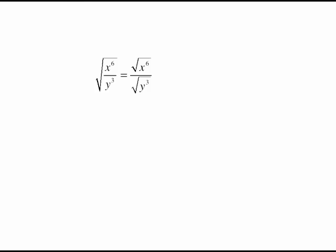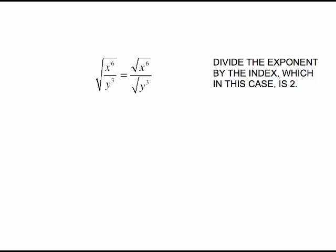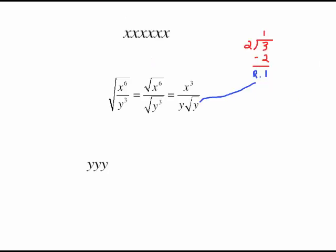Remember from previous videos on square roots that when you are doing the square root of a variable to a power, all you need to do is divide the power by the index. In this case the index is 2. It's not showing right here but it's understood when you're doing square root the index is 2. So all we have to do is divide 2 into that number and that becomes our power on the outside.